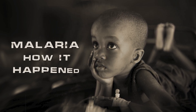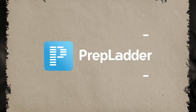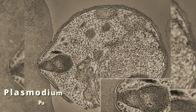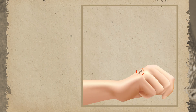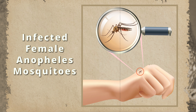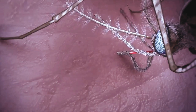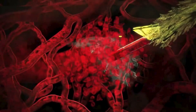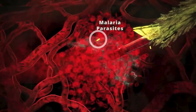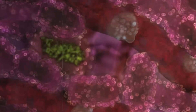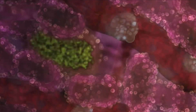Today, we are going to dissect how it happened. Join us on Prepladder's neatpg channel as we take a look at the history of this disease and our fights against it. Malaria is a life-threatening disease caused by Plasmodium parasites that are transmitted to people through the bites of infected female Anopheles mosquitoes. Only Anopheles mosquitoes can transmit malaria through a blood meal of an infected person. When a mosquito bites an infected person, a small amount of blood is taken which contains microscopic malaria parasites. About one week later, when the mosquito takes its next blood meal, these parasites, mixed with the mosquito's saliva, are injected into the person being bitten.